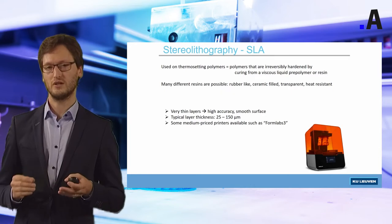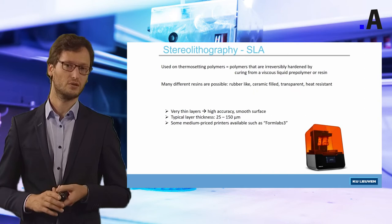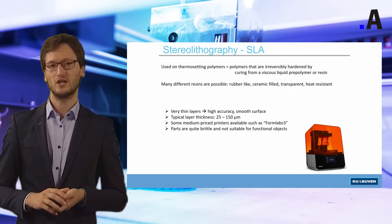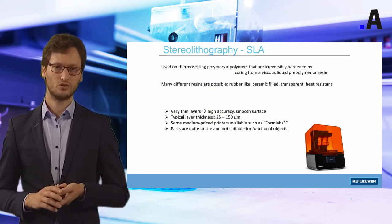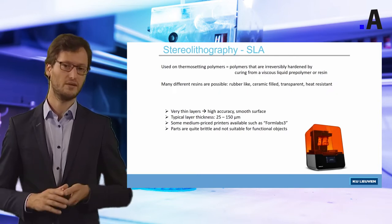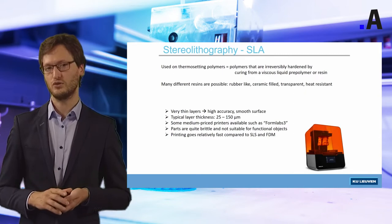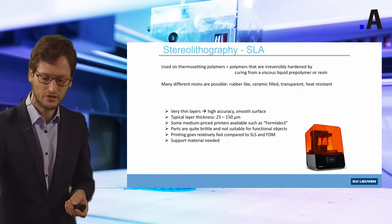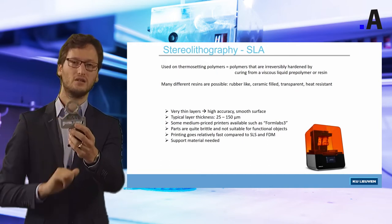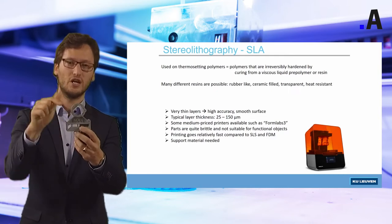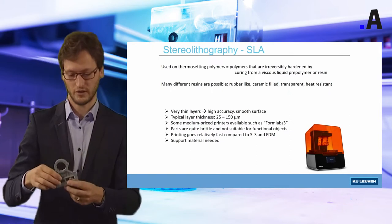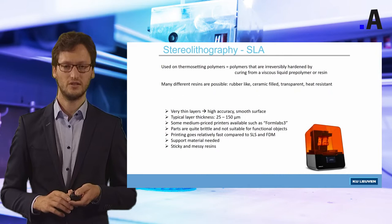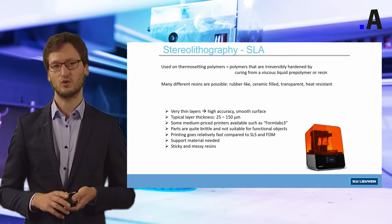Some stereolithography technologies are already commercially available, such as the Formlabs 3 printer. One disadvantage is that the parts produced are quite brittle, and so in many cases not suitable for real functional objects but rather for prototyping. Printing goes relatively fast compared to the other printing technologies we will see later. Another disadvantage is that support structure is needed for overhanging features — down-facing surfaces require support structures that have to be removed after printing. Also, the resins themselves are quite sticky and messy to work with.